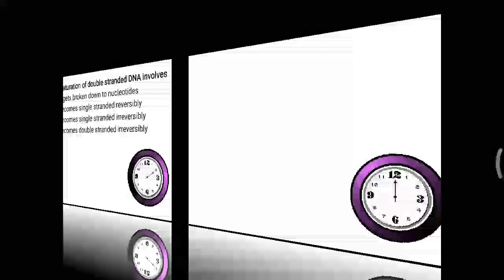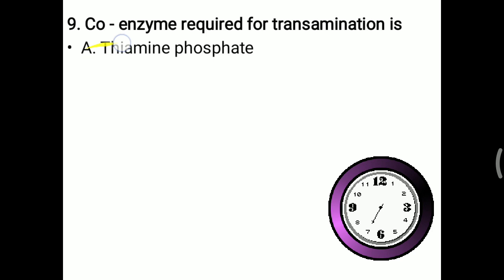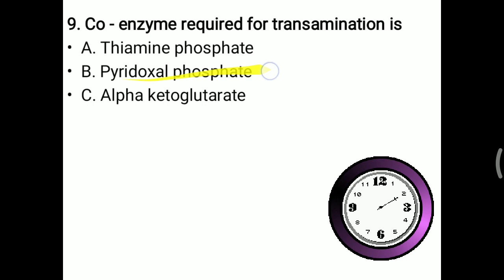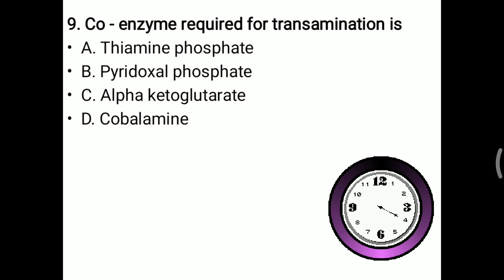Next question: coenzyme required for the transamination reaction. Transamination is an important reaction of protein metabolism; recall the enzymes SGPT and SGOT. Options: thiamine pyrophosphate (coenzyme of vitamin B1, mostly for carbohydrate metabolism), pyridoxal phosphate (PLP, derived from vitamin B6), alpha-ketoglutarate (TCA cycle intermediate), or cobalamin (vitamin B12). The right answer is pyridoxal phosphate — PLP is the most common coenzyme for protein metabolism and transamination.